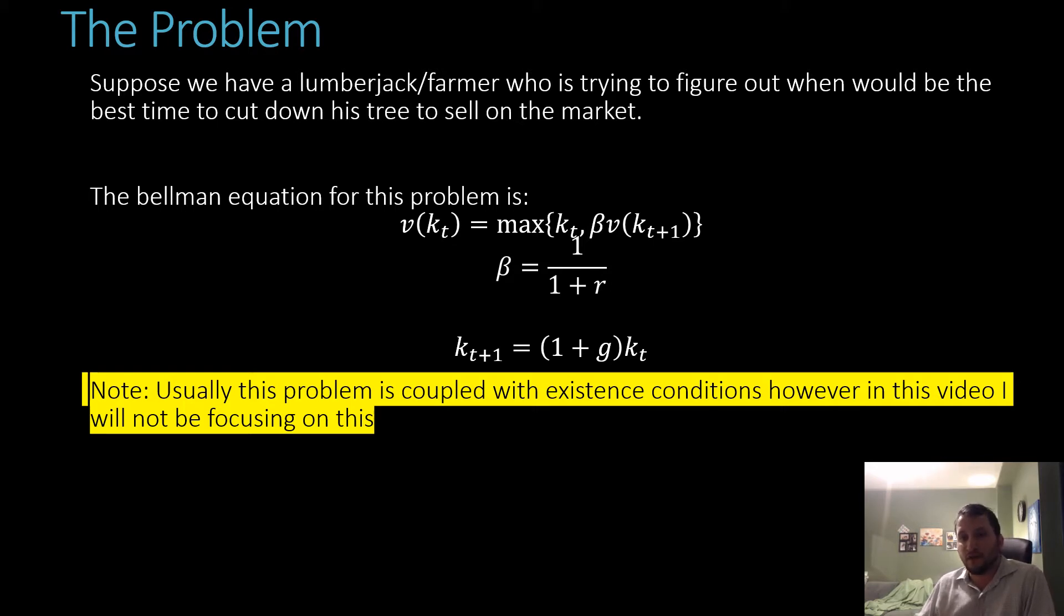The Bellman equation for this problem, which we can appeal to directly, is that the value from this tree at time t is equal to the maximum of kt, meaning that you pick up that tree, or you hold on to that tree, meaning you don't harvest it right away, and it's the discounted value in the next period, where beta equals 1 over 1 plus r. And our kt plus 1, which is our tree size in period t plus 1, is equal to 1 plus g times kt.